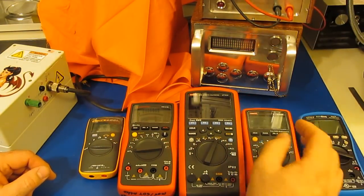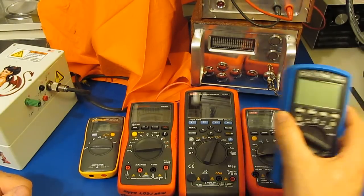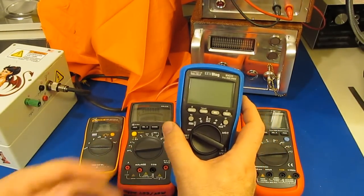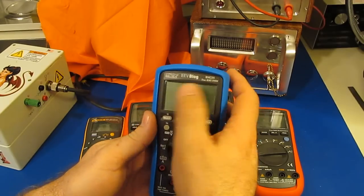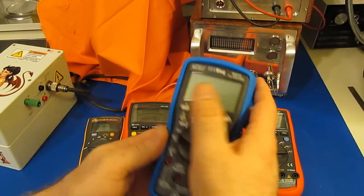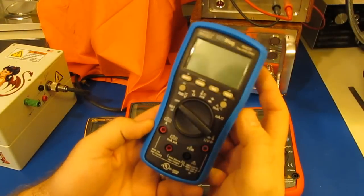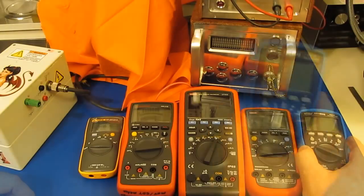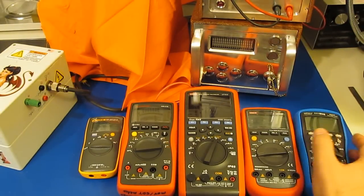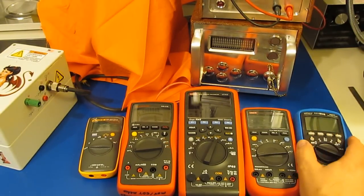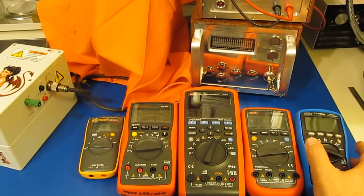Most of you are familiar with Dave Jones, he runs the EEV blog site. He released this rebranded Brymen, this is the BM 235. This is one very robust meter.